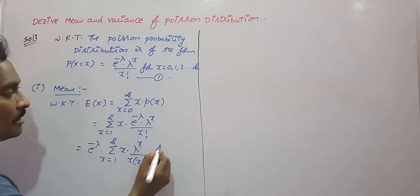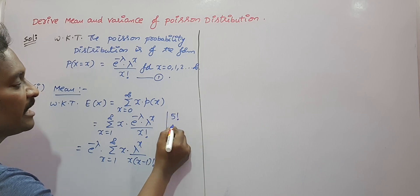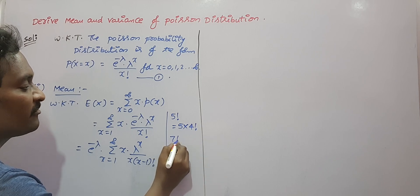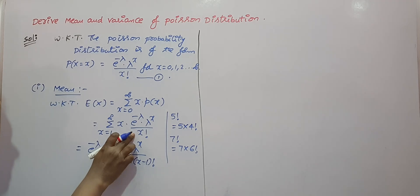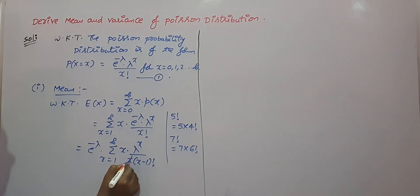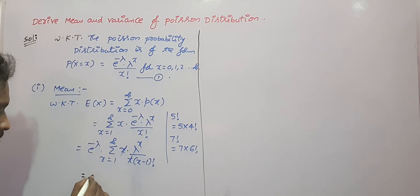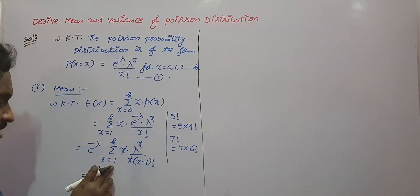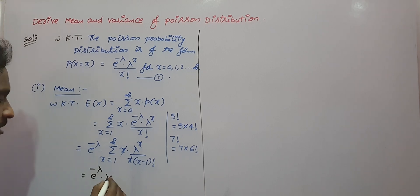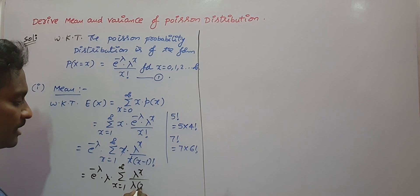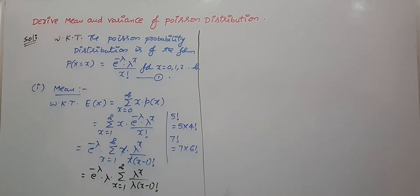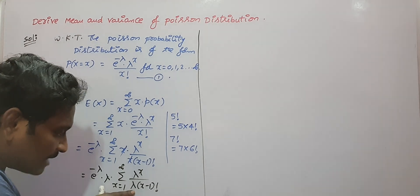We write x! as x·(x−1)!, so x cancels from the numerator and denominator. To simplify further, we multiply and divide by λ, giving summation from x = 1 to infinity of λ^x / (λ · (x−1)!). This λ in the denominator cancels with λ^x in the numerator — since bases are equal, we add the powers — giving e^(−λ) times the summation.